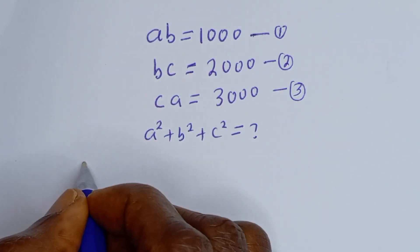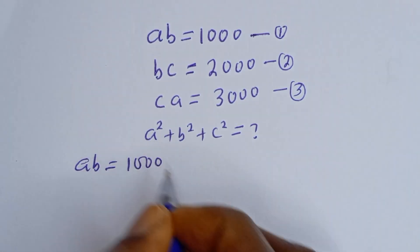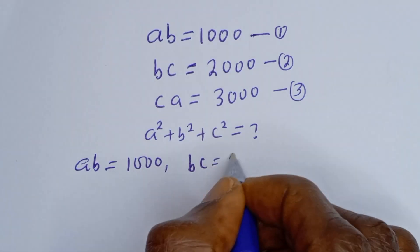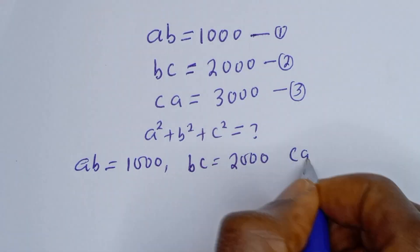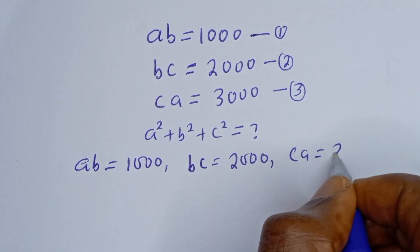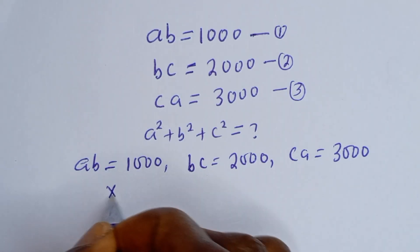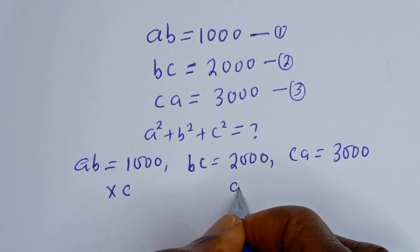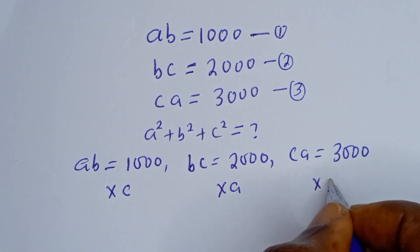From equation 1 we have A·B equal to 1000. Equation 2 is B·C equal to 2000, and equation 3 is C·A equal to 3000. Let's multiply equation 1 by C, equation 2 by A, and equation 3 by B.